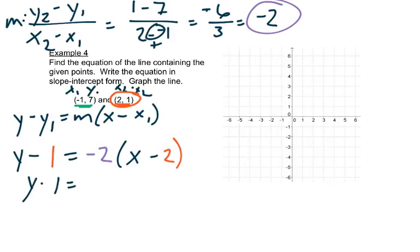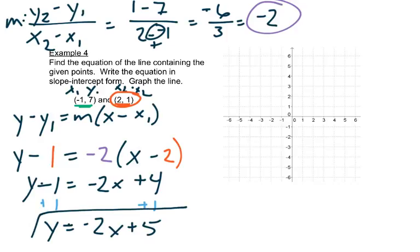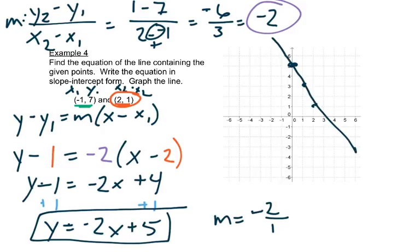Then I'll distribute: negative 2x plus 4. Then I'll add 1 to both sides. So I get y equals negative 2x plus 5. So here's my equation. To graph it, I would put, there's my 5. Remember my slope is negative 2 over 1, rise over run. So I go down 2, right 1, down 2, right 1. And that's my equation.